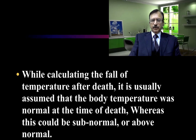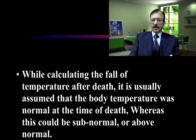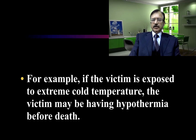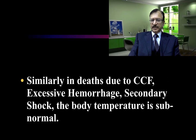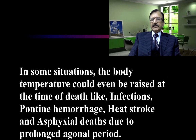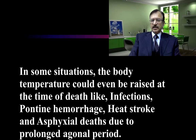Regarding body temperature: it should be kept in mind while calculating the temperature that normally it is assumed the body is at a normal temperature at death. However, this can be subnormal — for example, if the victim was exposed to extreme cold, they may have had hypothermia before death. If death is due to congestive cardiac failure, excessive hemorrhage, or secondary shock, the body temperature in these conditions is also subnormal. In some conditions, the body temperature could be raised at the time of death, like infections, pontine hemorrhage, heat stroke, asphyxial death, or any condition which leads to a prolonged agonal period.